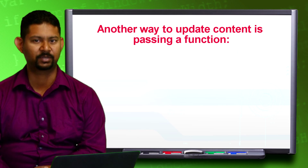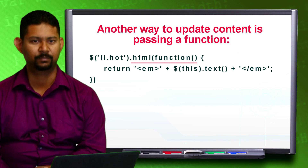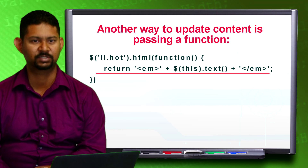Another way to update content is passing a function. In this example, an anonymous function is passed to .html. This function returns the text content with em tags.